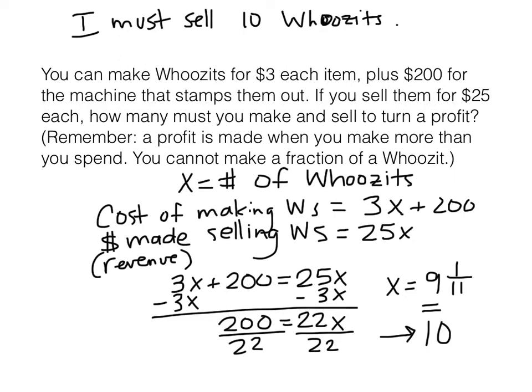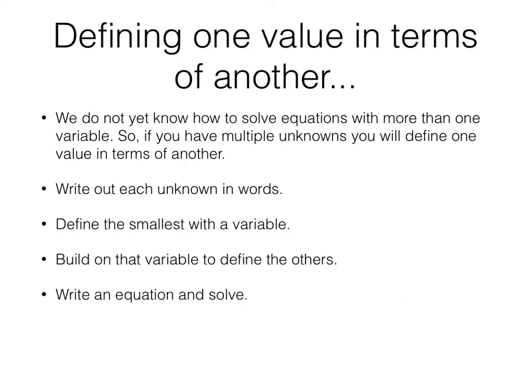Break-even problems — expect to see those in class. Let's try another concept: defining one value in terms of another. We do not yet know how to solve equations with more than one variable. The dirty secret is you need two equations to solve for two variables — we'll do that second quarter or second semester. So if you have multiple unknowns, you define one value in terms of another. We write out each unknown in words, define the smallest unknown with a variable, build on that variable to define all the other unknowns, then write an equation and solve.